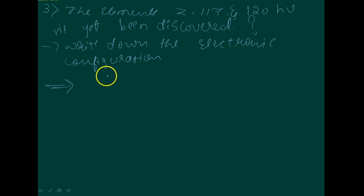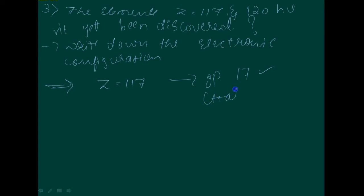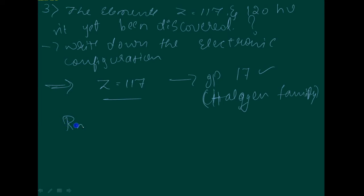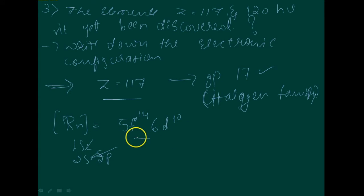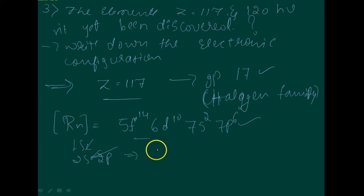The element with Z=117 belongs to the halogen family, that is group 17. The electronic configuration is: 1s² 2s² 2p⁶ ... 5f¹⁴ 6d¹⁰ 7s² 7p⁵ — you write it out fully to get the complete electronic configuration.